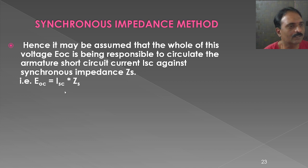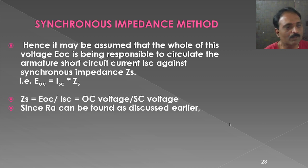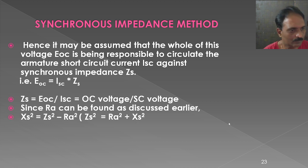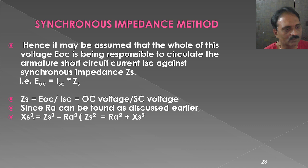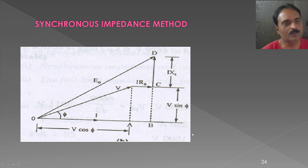ZS is defined as Eoc divided by Isc, which gives the synchronous impedance. The armature resistance is evaluated from the volt-ampere method, and synchronous reactance is found using XS² = ZS² − RS². Once we know XS and RA, we can find the regulation using the phasor diagram.